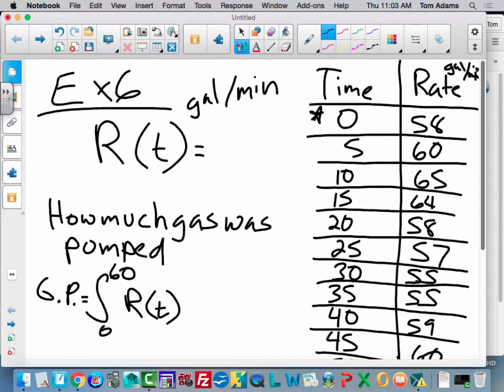So a long time ago, we talked about Riemann sums and various ways that we can calculate. By the way, what is that graphically? That's the area under the curve. So if I were to graph this information, like in an XY plane, I'd have all these points, and I could draw a mathematical model and calculate the area under the curve, and the area under the curve would represent how much gas was pumped in gallons. Does that make sense to you guys?